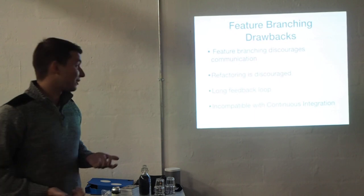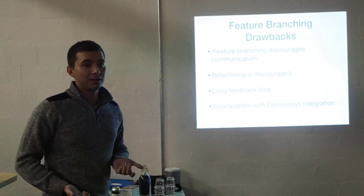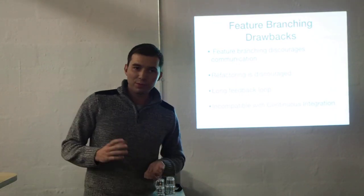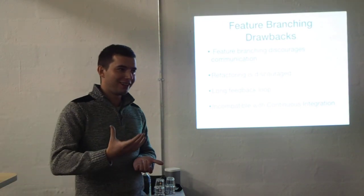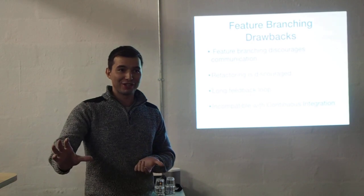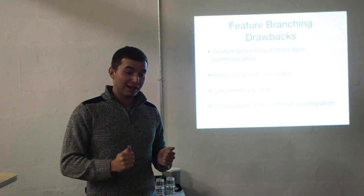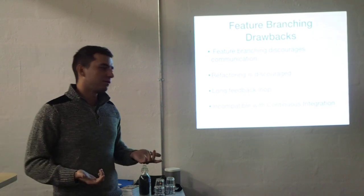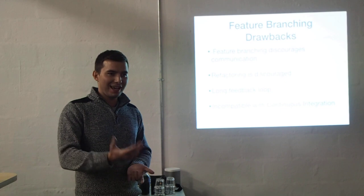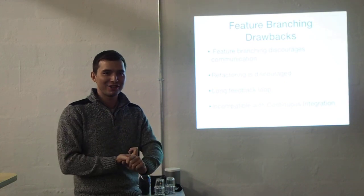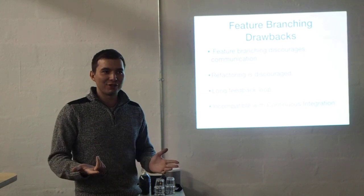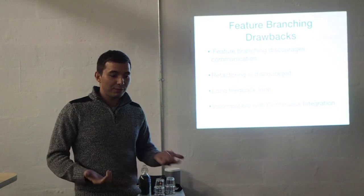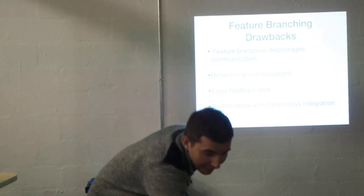Finally — and this might be a contentious point — feature branching is incompatible with continuous integration. They both can't actually co-exist. There's a problem that as software developers, we think that continuous integration is running a Jenkins instance against your feature branch and the tests pass. Unfortunately, that's not actually the case. When I run tests against my branch, I'm testing my branch and master — that's it. I'm not testing any of the integrations that anyone else is working on. I'm testing a small part of the code that will never exist in reality. Testing is less effective under feature branching.